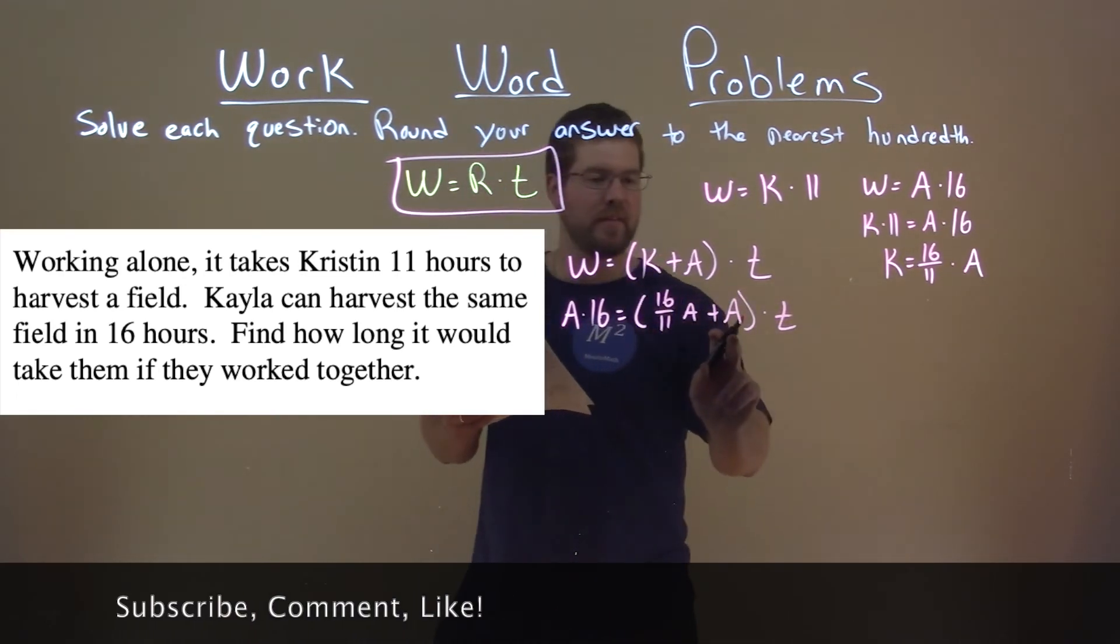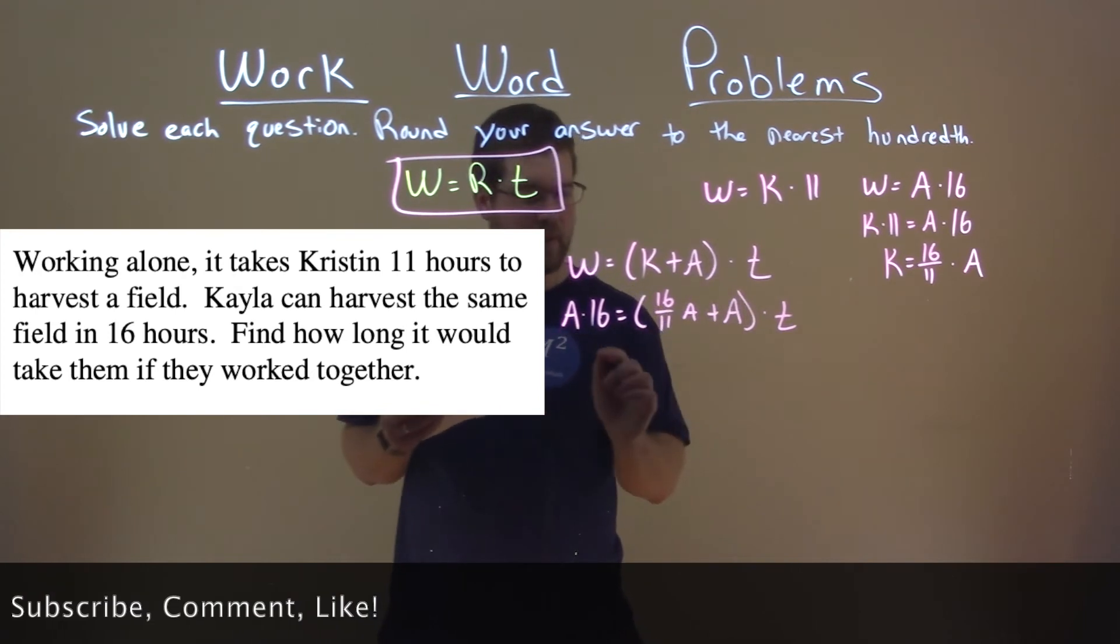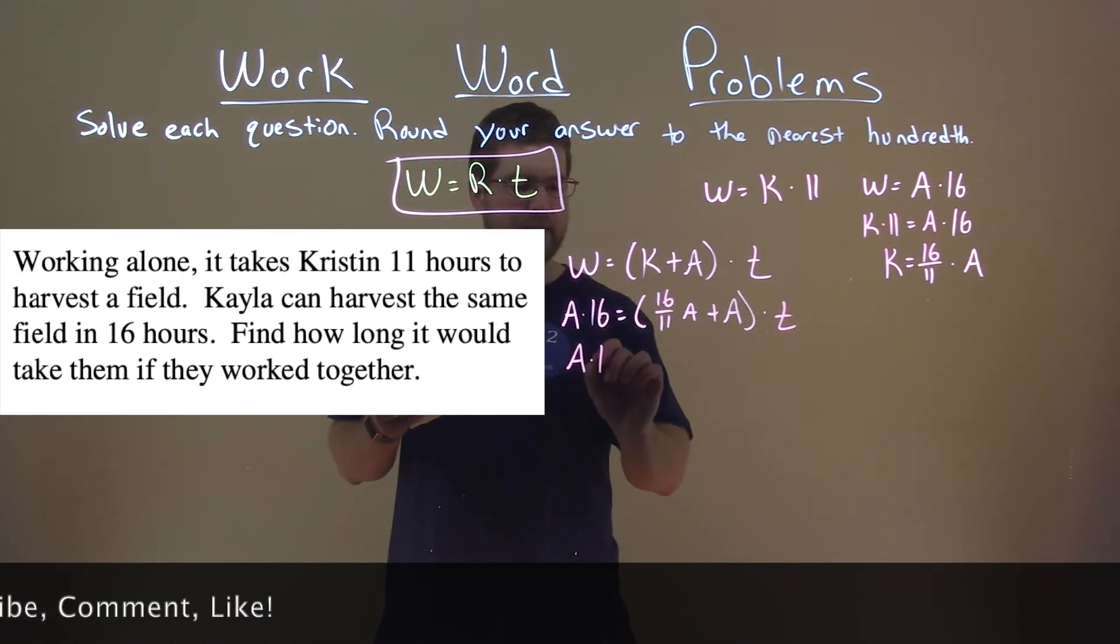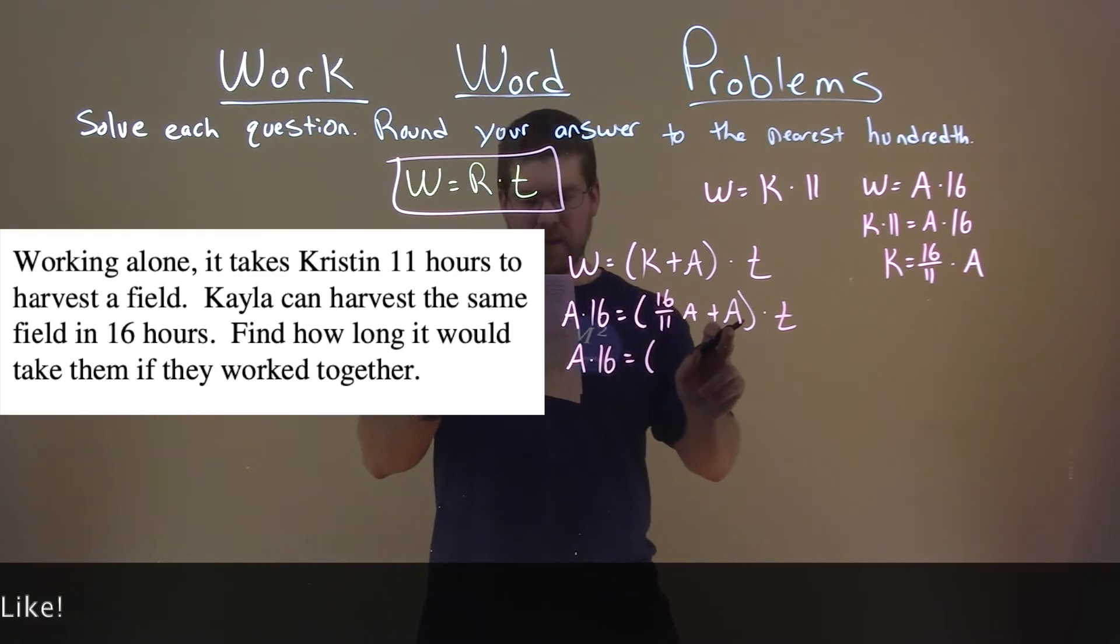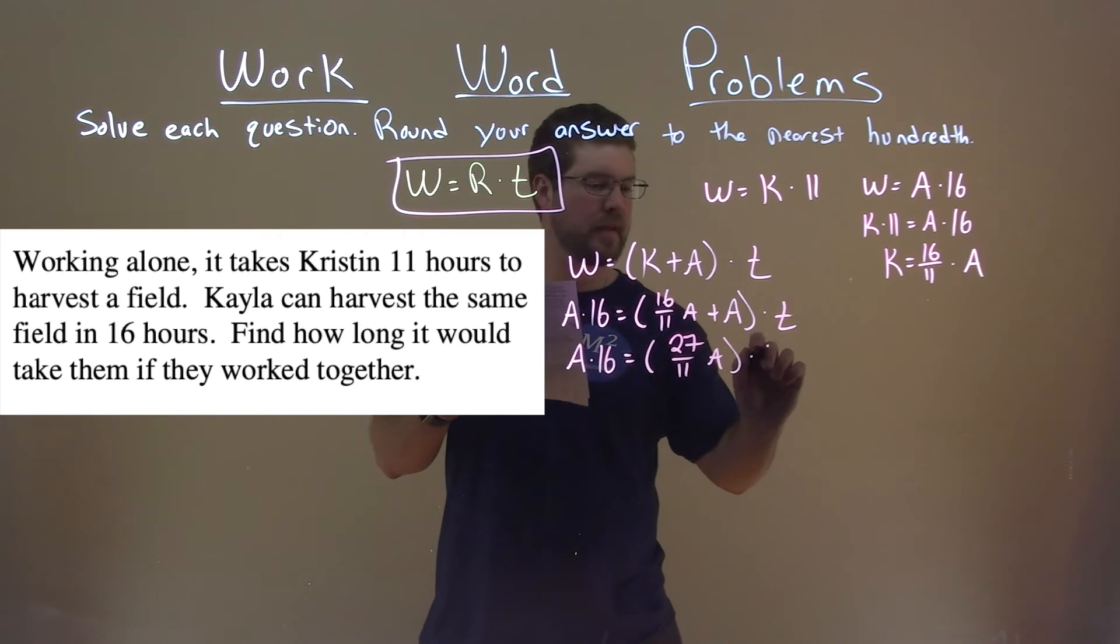Add this inside together. Inside the parentheses, we simplify: A times 16 is equal to 16 over 11 plus 1 A, which is 27 over 11 A times T.